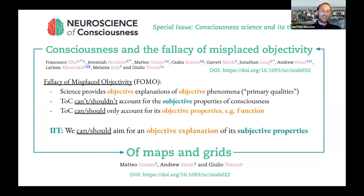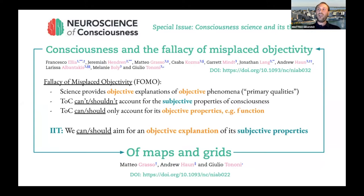The idea of IIT is to say we shouldn't commit this fallacy, because we can and should aim for an objective explanation of the subjective properties of consciousness. Otherwise we would really be missing out on what is most important about consciousness: its subjective phenomenology.